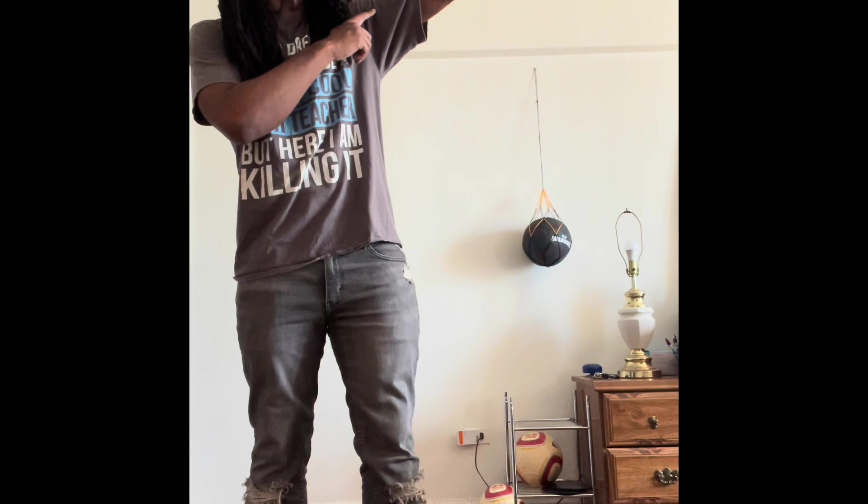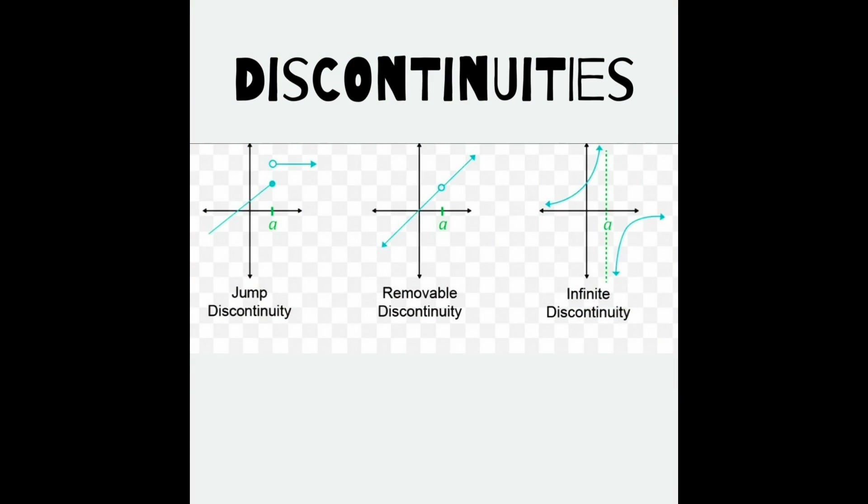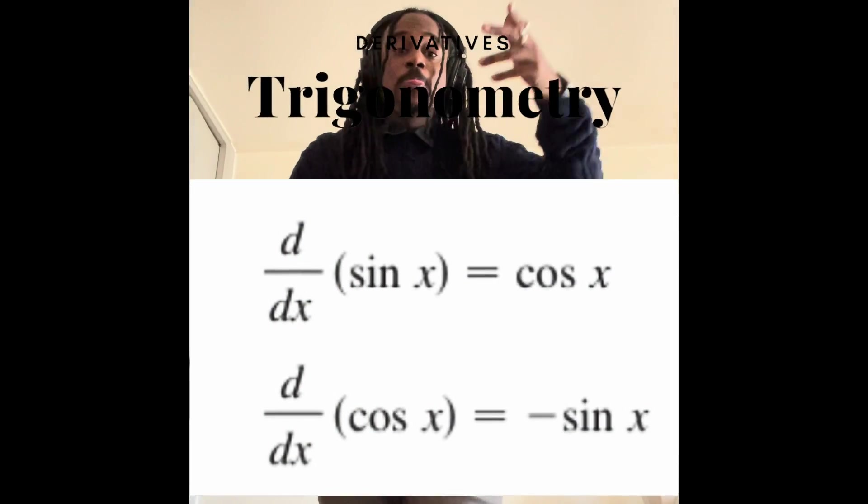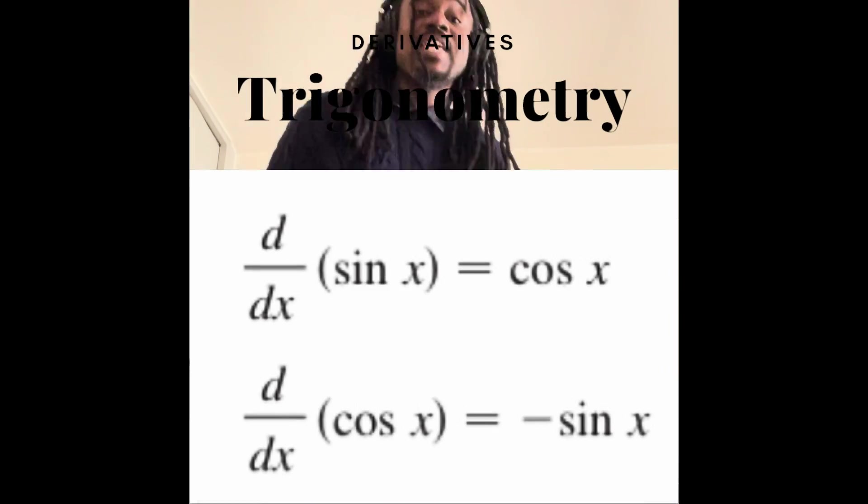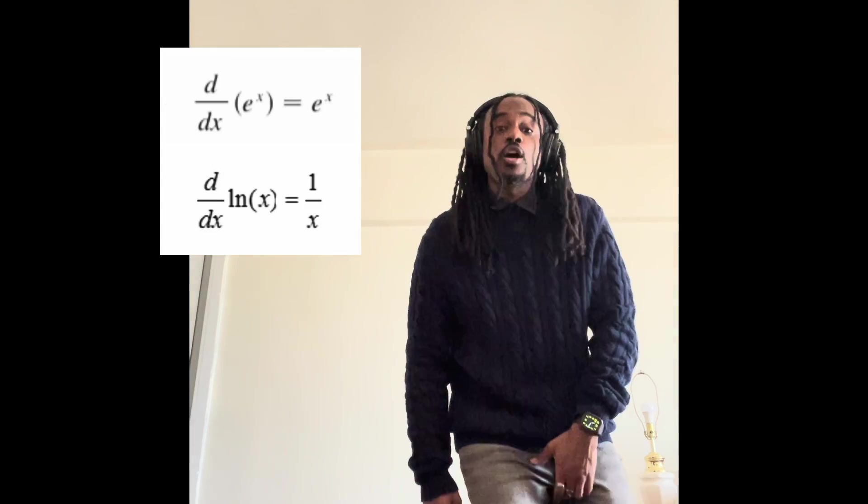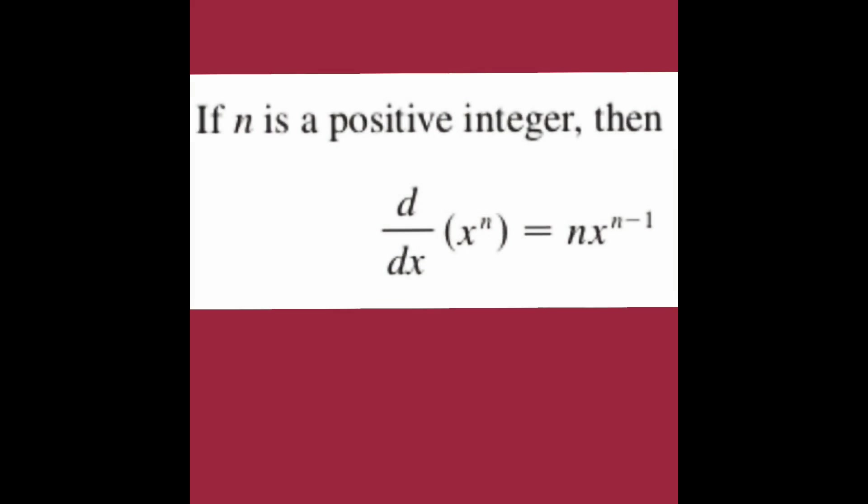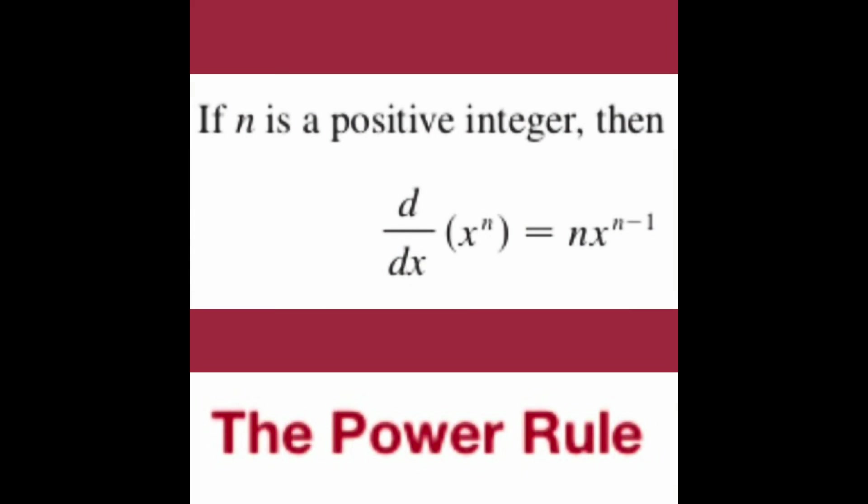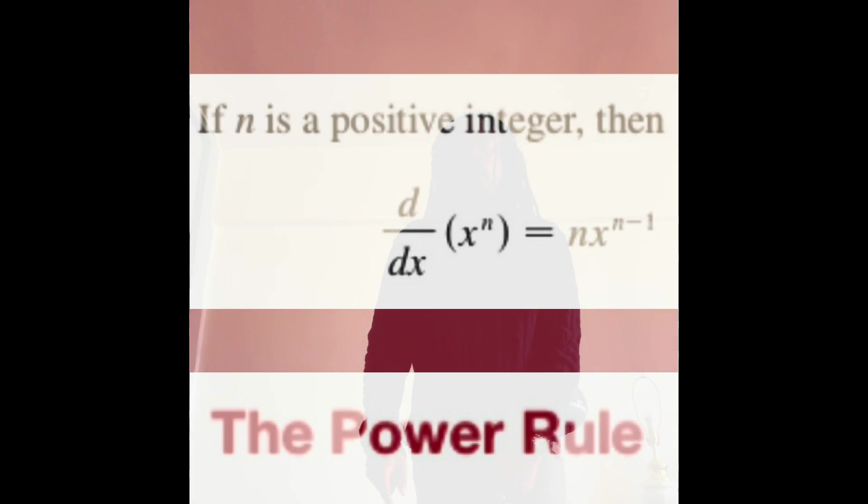Discontinuity, graph it for you to see - some removable or to infinity, others jump. Memorize these: derive the sine and you get cosine, the cosine returns negative sine. E to the x is e to the x, natural log x is one over x. Remember chain rule, research the power rule as well. Derive x to the n equals n times x to the n minus one.